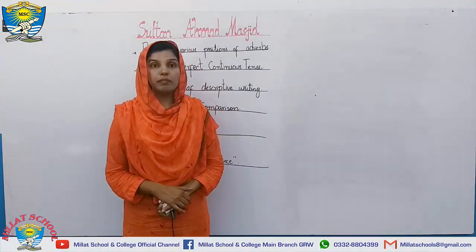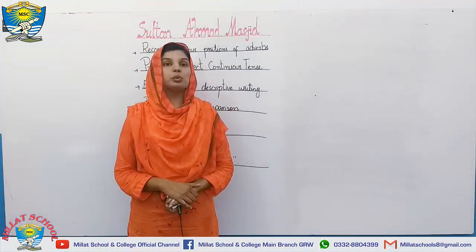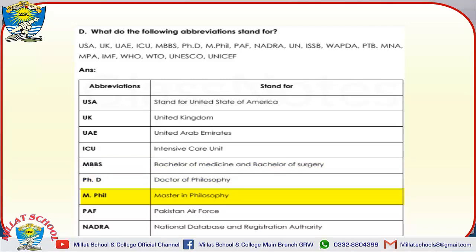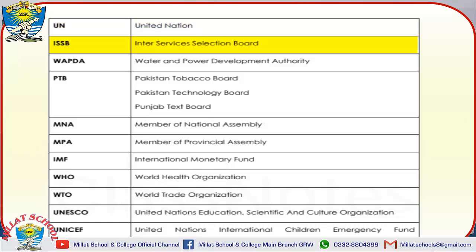In the next vocabulary activity B, they have given you some abbreviations and you have to tell their complete forms. USA — United States of America. UK — United Kingdom. UAE — United Arab Emirates. ICU — Intensive Care Unit. MBBS — Bachelor of Medicine and Bachelor of Surgery. PhD — Doctor of Philosophy. MPhil — Masters in Philosophy. PAF — Pakistan Air Force. NADRA — National Database and Registration Authority. UN — United Nations. ISSB — Inter Services Selection Board. WAPDA — Water and Power Development Authority.